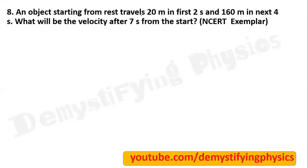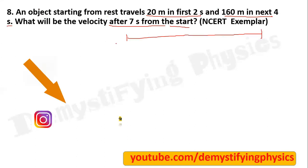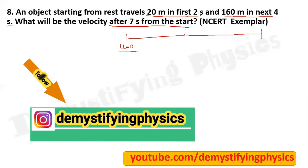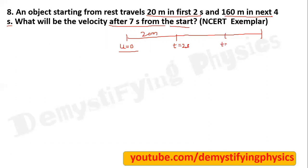An object starting from rest travels 20 meter in the first 2 seconds and 160 meter in the next 4 seconds. What will be the velocity after 7 seconds from the start? This question is a little tricky but you can try it. The body starts from rest; in the first 2 seconds it travels 20 meter. Next 4 seconds means from 2 to 6 seconds, it travels 160 meter. You have been asked for the velocity after 7 seconds.